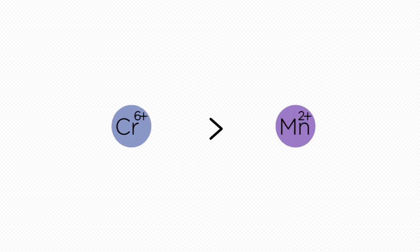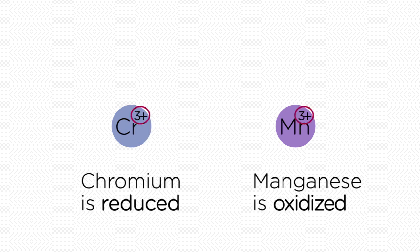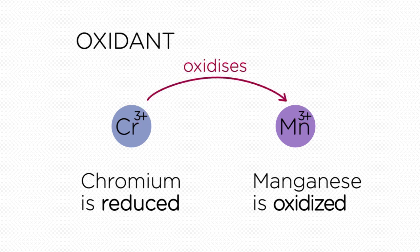When a highly charged metal like chromium 6 plus reacts with a less highly charged metal, let's say manganese 2 plus, it takes electrons. Chromium is reduced and manganese is oxidized. If we look at this from the perspective of chromium, chromium is doing the oxidizing, making it an oxidant.